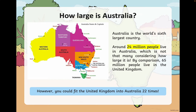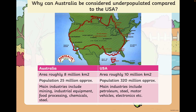The first key aspect is looking at the size of Australia. The population is around 24 to 25 million. Compared to the United Kingdom, which has a population of 65 million, it's clearly much lower — and you could fit the UK into Australia 22 times. Comparing to America, which is similar in size, Australia's population of around 25 million is tiny against America's 320 million. You can clearly see there's an underpopulation crisis in Australia.